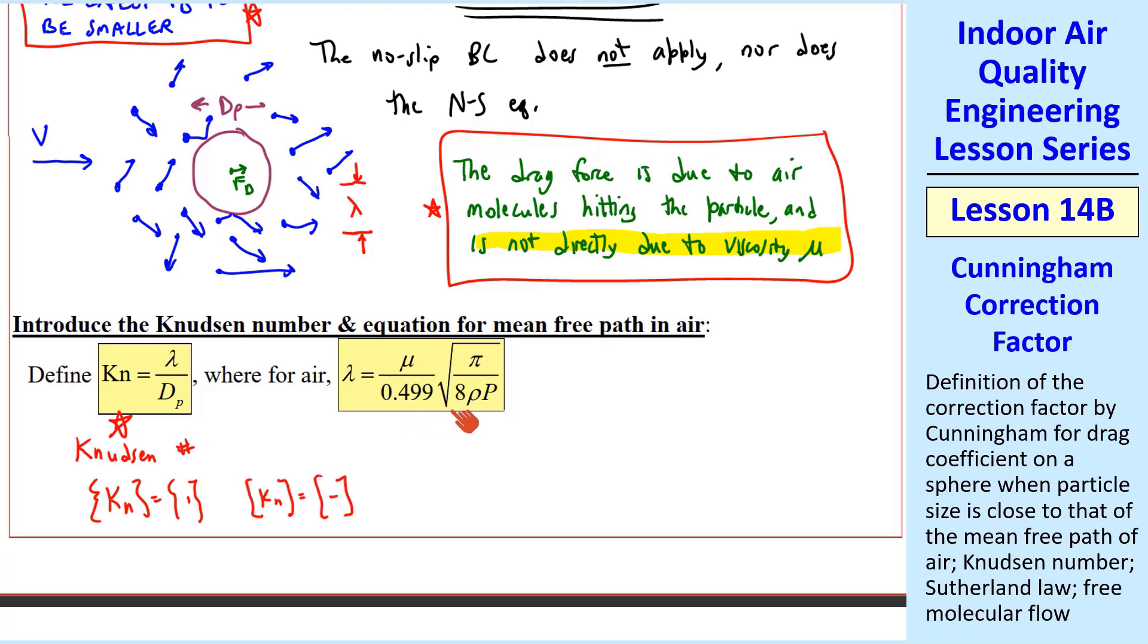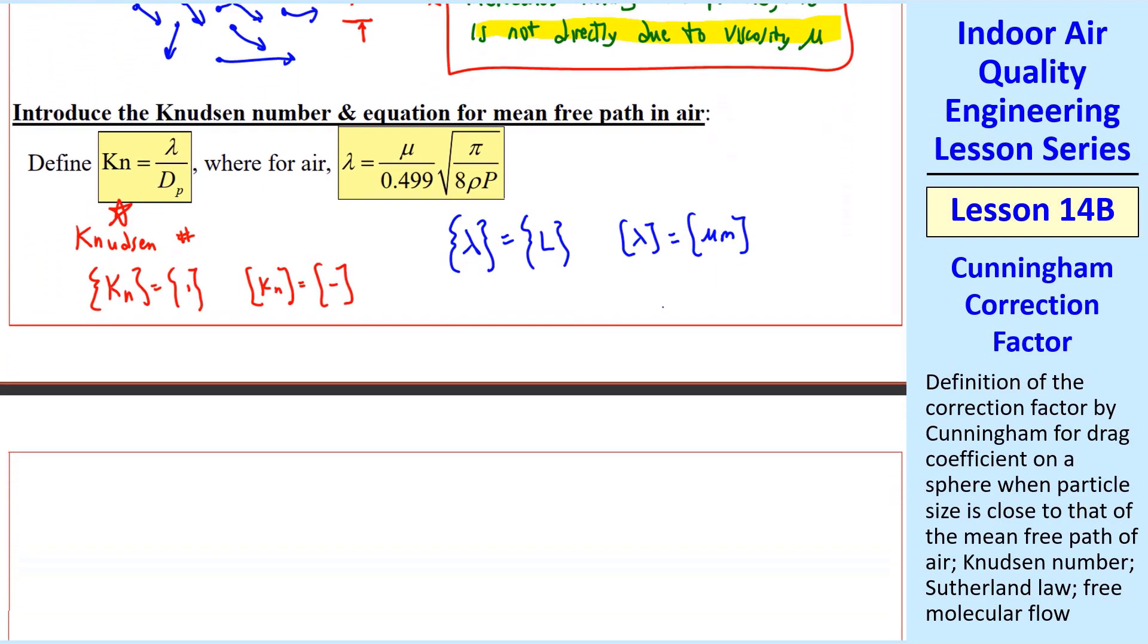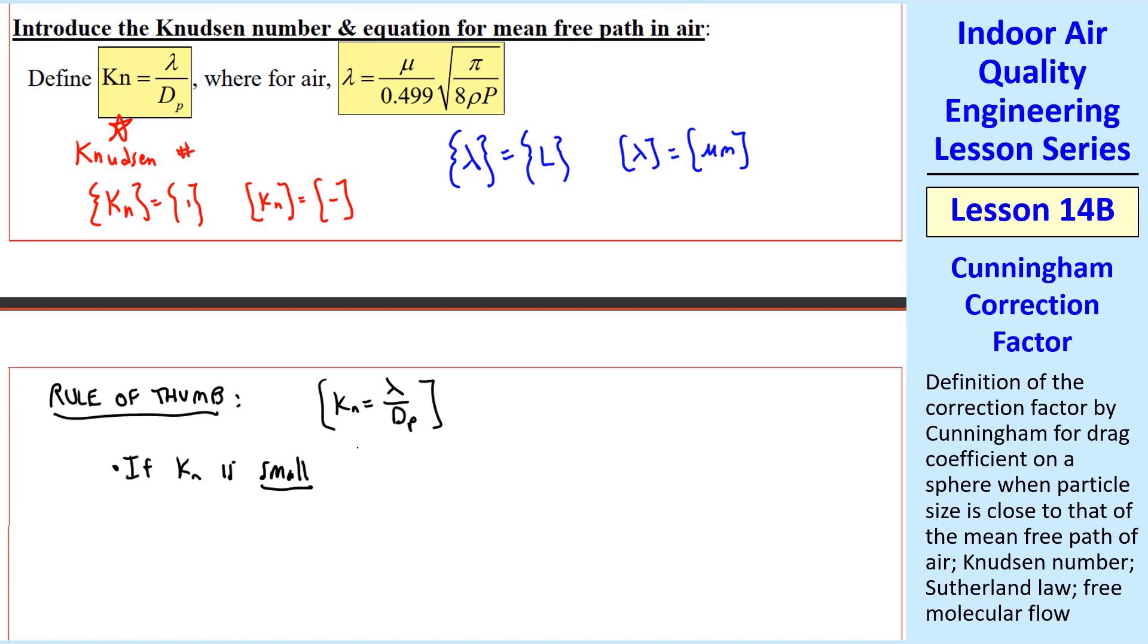Here's an equation for lambda, the mean free path. The dimensions of lambda are length, since it's an average distance between air molecules. Typical units are microns. Here's a rule of thumb for this Knudsen number. If Knudsen number is small, for example less than about 0.1, dp is greater than lambda, so these are relatively large particles.